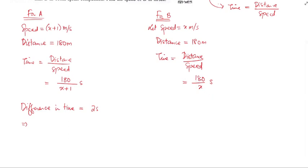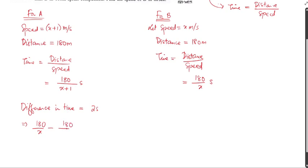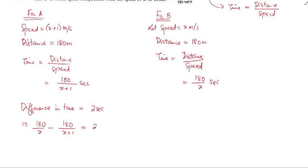Now we set up the equation for the difference in time. We have 180 divided by x minus 180 divided by x plus 1, and this difference equals 2 seconds, since A arrives 2 seconds earlier than B.